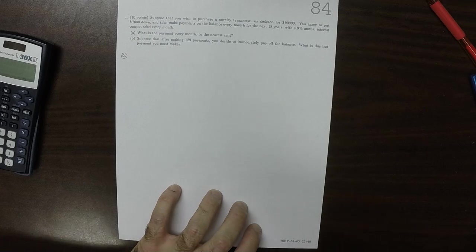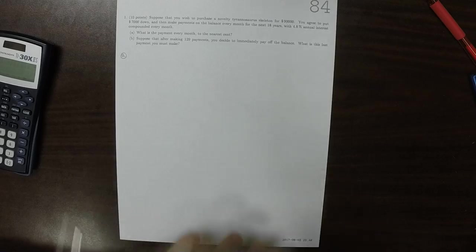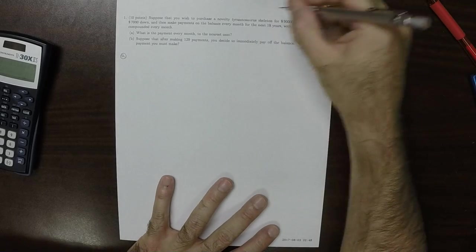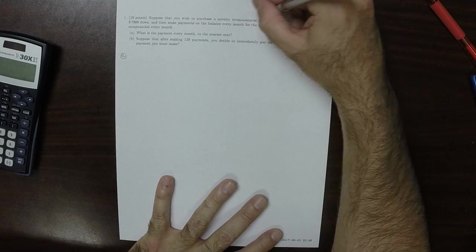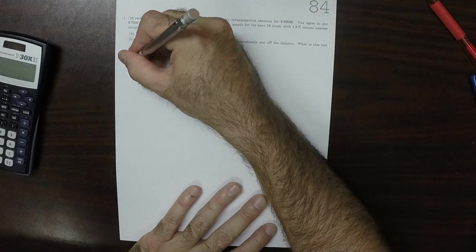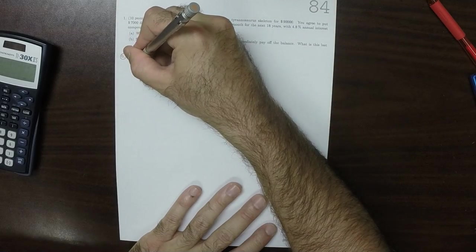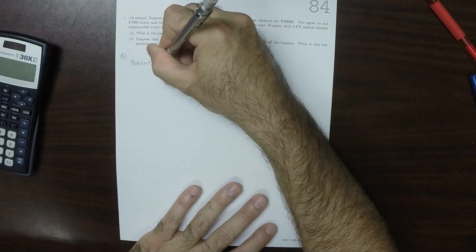What is the monthly payment? Okay, so because you wish to make this purchase right now, that means that the present value of the Tyrannosaurus skeleton is $90,000. So this is at the present value, this is at the present time. So we'll need to use the present value formula.